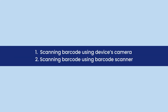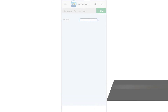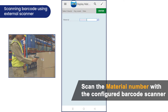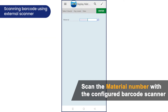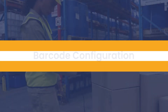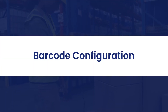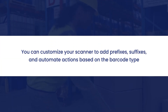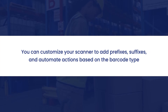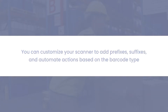You can also use a designated barcode scanner. With barcode configuration, you can configure your scanned data to include types, prefixes, and suffixes to ensure that your inputted data is always formatted correctly and entered accurately.